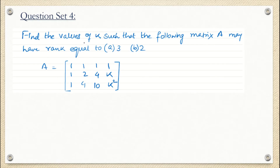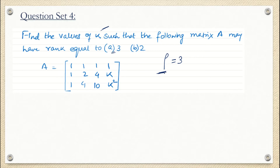The question asks us to find the values of k such that the following matrix may have rank equal to 3, and may have rank equal to 2. That means they have already given you that the rank of the matrix is 3 and we have to find the value of k. Similarly, if the rank given is 2, we have to find the value of k. The given matrix is a 3×3 matrix — 3 rows and 3 columns. If the rows are 3 and the rank is also 3, that means all 3 rows are distinct, all 3 rows are useful, and all 3 rows are linearly independent.